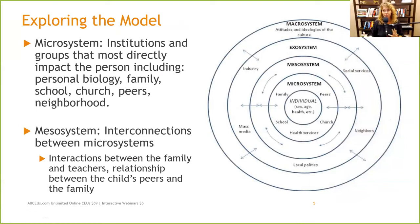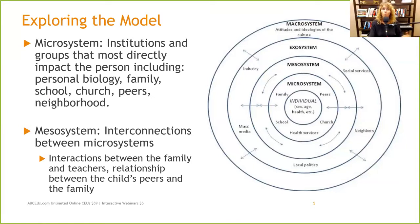The mesosystem is the interconnection between microsystems. So how do family and peers interact? My family was very accepting of most of my peers, but I know other friends of mine who brought home peers who were not as well accepted by their family. So there was some conflict between the family and the peers — and we know how much peer pressure and peer relationships are important in an adolescent's life.